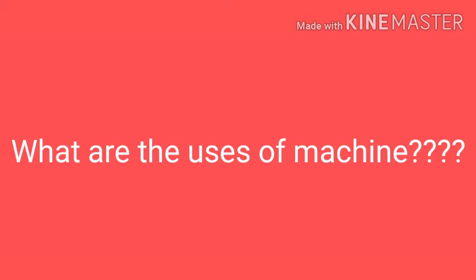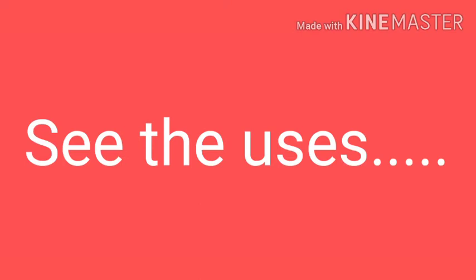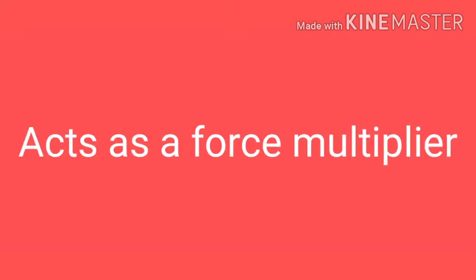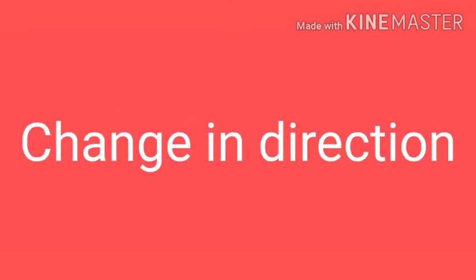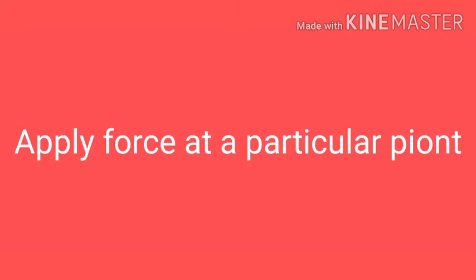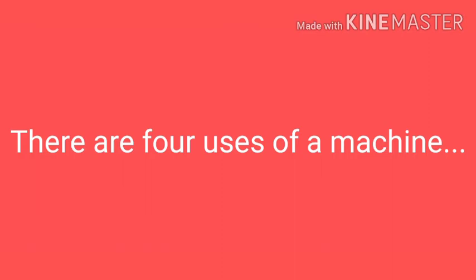If I talk about the uses of a machine, let's see what they are. First, a machine acts as a force multiplier. Second, it acts as a means of gaining speed. Third, it causes a change in direction. Fourth, it helps to apply force at a particular point. These are the four uses of a machine.